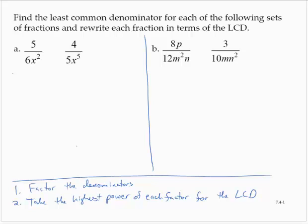Second, we take the highest power of each factor for the LCD. So our first step: 6x squared is 2 times 3 times x squared. And 5x to the fifth is 5 times x to the fifth.